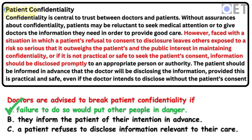Let's read the highlighted section of the paragraph together. However, faced with a situation in which a patient's refusal to consent to disclosure leaves others exposed to a risk so serious that it outweighs the patient's and the public interest in maintaining confidentiality, or if it is not practical or safe to seek the patient's consent, information should be disclosed. This tells us that doctors can disclose information if others are exposed to a risk that outweighs the interest in maintaining confidentiality.